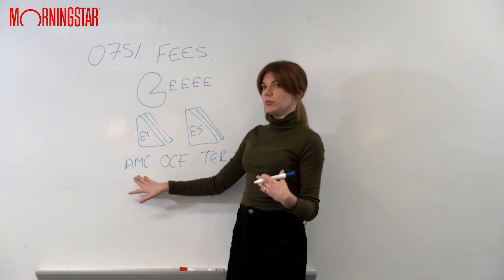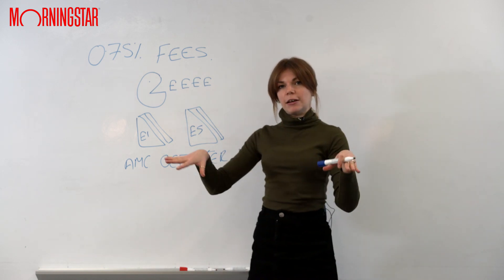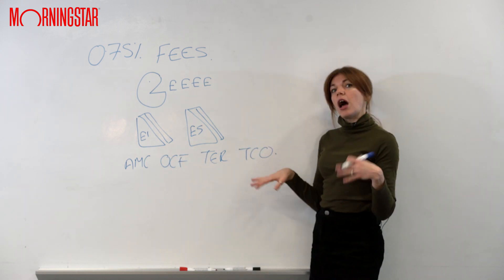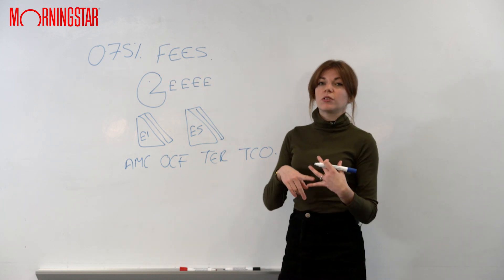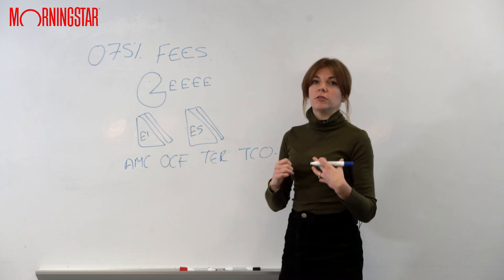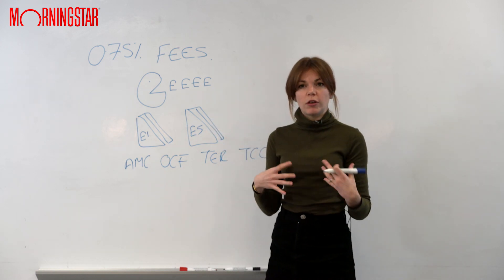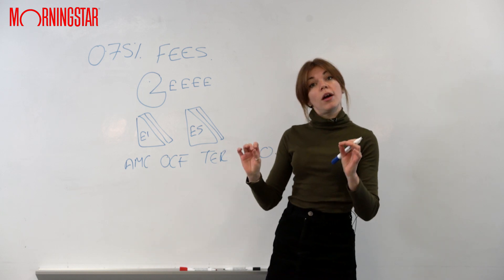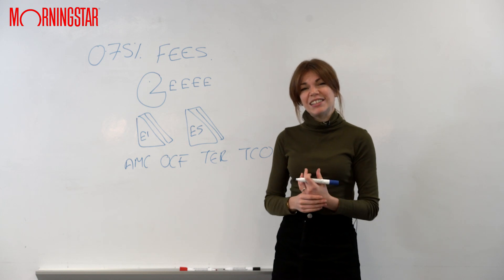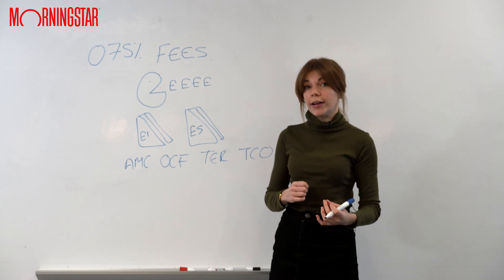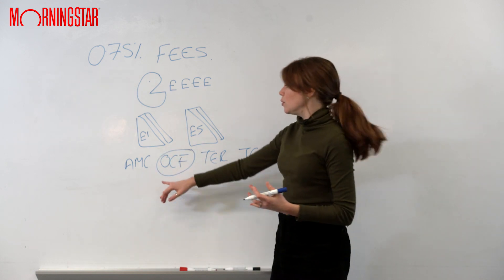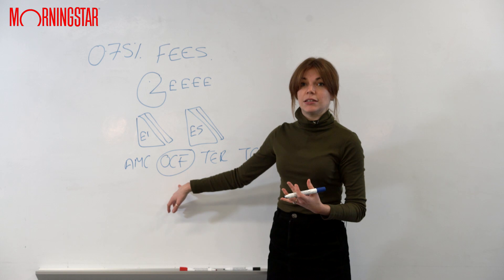The annual management charge is the basic fee you're paying for just investing in the fund. The other ones include other bits and pieces like the cost of buying and selling the shares for the fund manager, the administration, and the people they pay to look after the money in the fund. They all vary ever so slightly. The one that we typically use at Morningstar — because it's one of the easiest to find on a fund's fact sheet — is the OCF. So if in doubt, do look for those three letters and that will help.